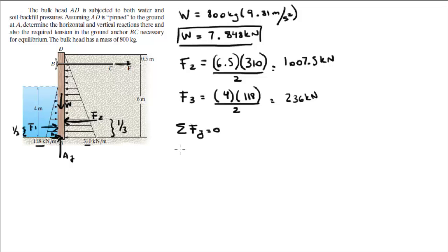Let's start with sum of the forces in Y equals zero. It's the easiest one because you got the weight coming down, which we already found, plus AY is equal to zero. So as you can see, AY is equal to the weight, which is going to make AY equal to 7.848 kilonewtons.